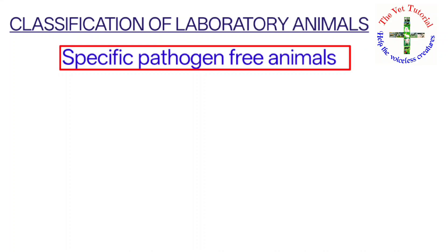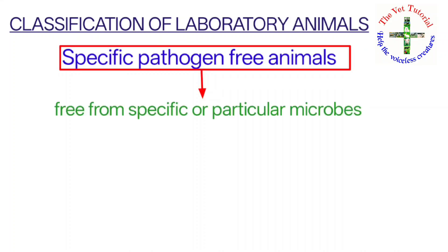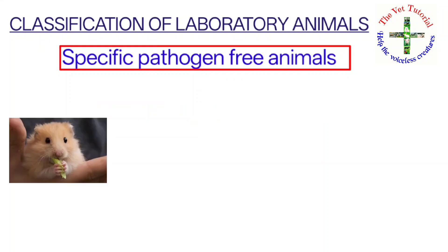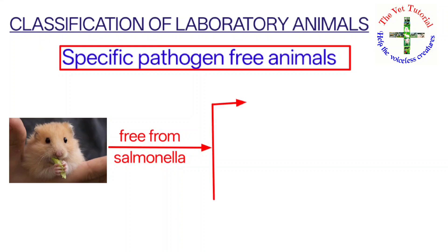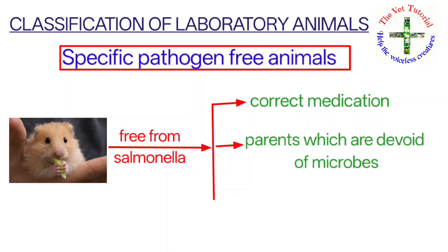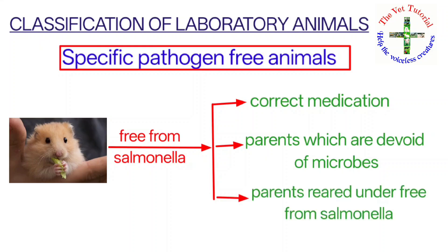Third is specific pathogen free (SPF) animals. An animal which is made free from specific or particular microbes is known as an SPF animal. For example, to make an animal free from Salmonella, this can be done by correct medication or by deriving from parents devoid of such microbes and bred under Salmonella-free conditions. It may still have other organisms.